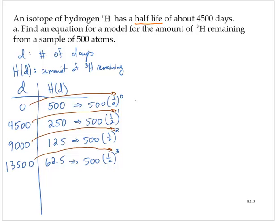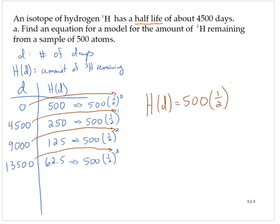So what I can do here is write the model: H of D is the initial number times one-half. Now, don't just write D as the exponent — that just doesn't work, because after one day there would be 250 atoms. Instead, we need to take the number of days and divide by 4,500 to get the exponent. So H of D equals 500 times one-half raised to the quantity D divided by 4,500.